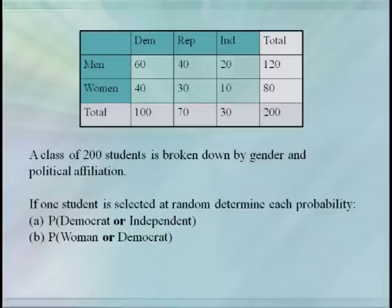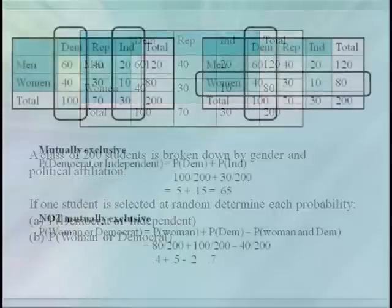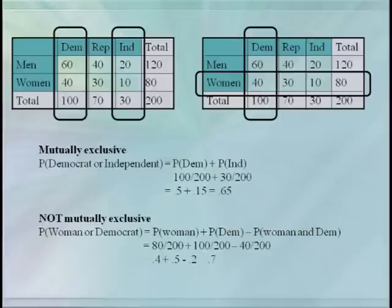Here's an example. Suppose we did a survey on gender and political affiliation for a class of 200 students. If a single student is picked at random, what's the probability that they are a Democrat or an Independent? And what's the probability that they are a woman or a Democrat? In the first case, Democrat and Independent are mutually exclusive, so we just add their probabilities: 100 over 200 plus 30 over 200, which is about 0.65. In the second case, the events overlap, so we subtract the duplicated values — women who are Democrats. We get 80 over 200 plus 100 over 200 minus 40 over 200, which equals about 0.7.